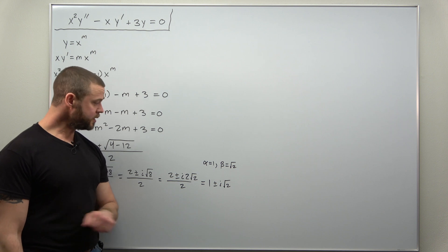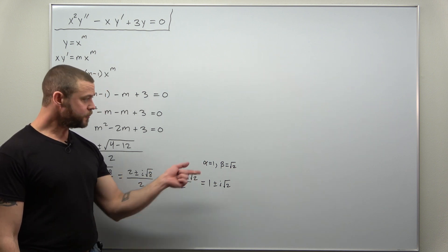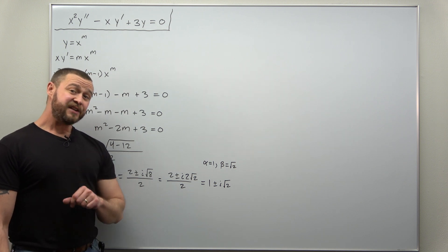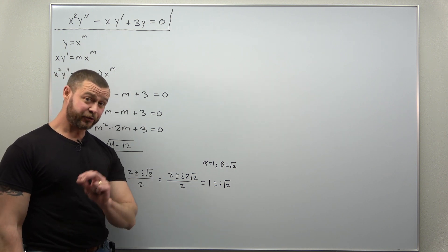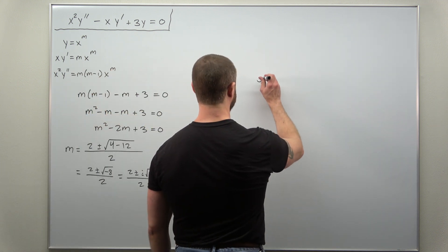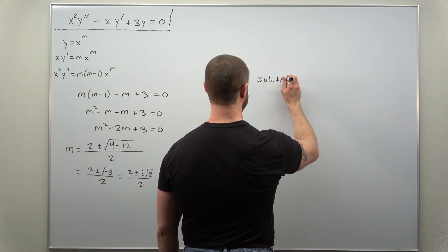So alpha is 1, beta is square root of 2. As long as you know the form for your solution, in the case of complex auxiliary roots to the Cauchy-Euler equation, you can get your solution very quickly here.